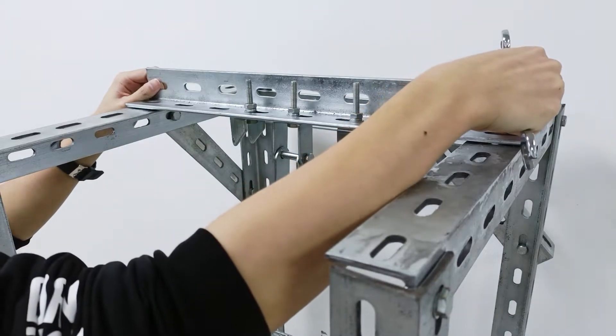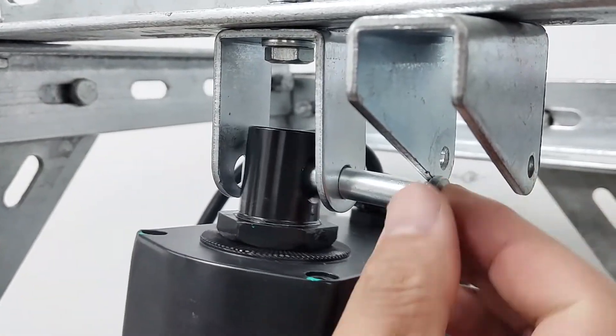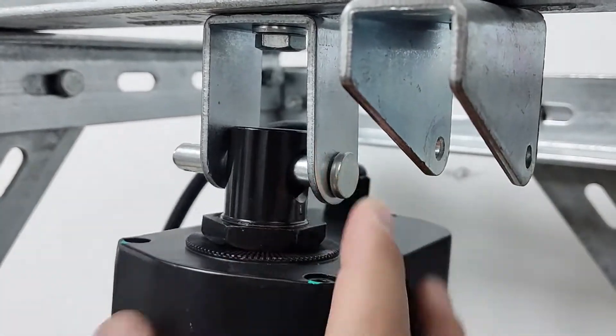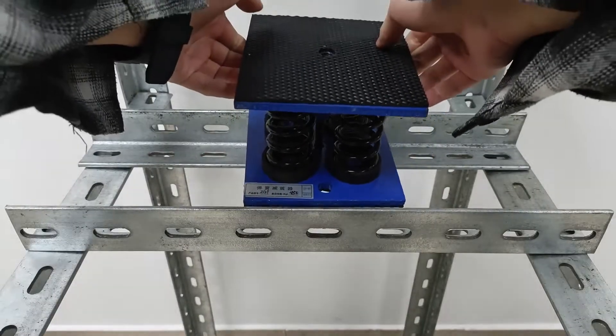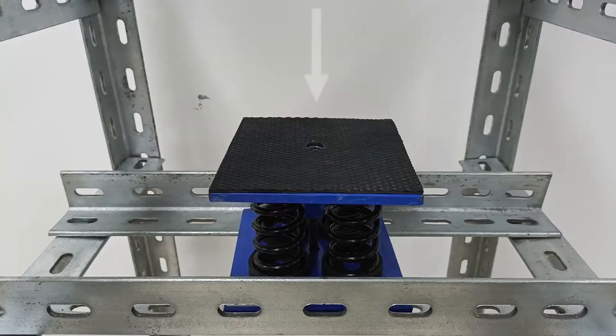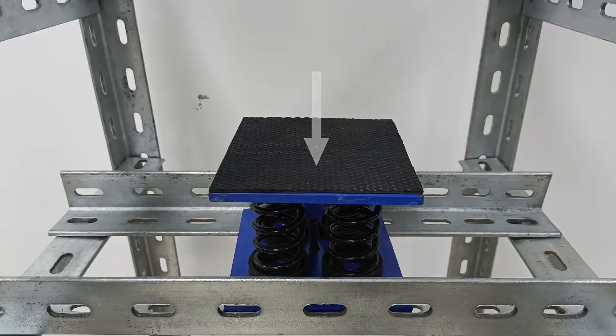Then we also installed a beam on the middle of the test frame and fixed the shock absorber to the beam. We want to use a linear actuator to squeeze this shock absorber in order to measure the thrust force when the linear actuator squeezes this shock absorber.